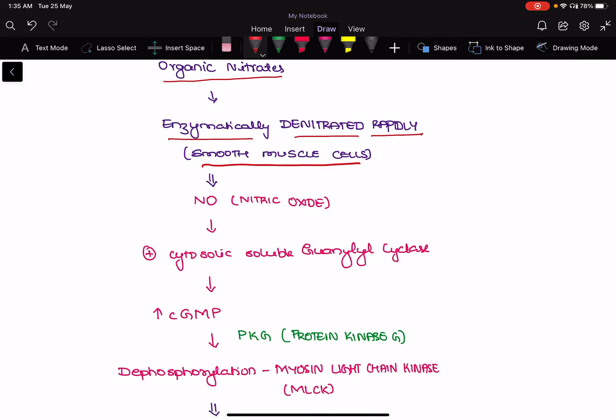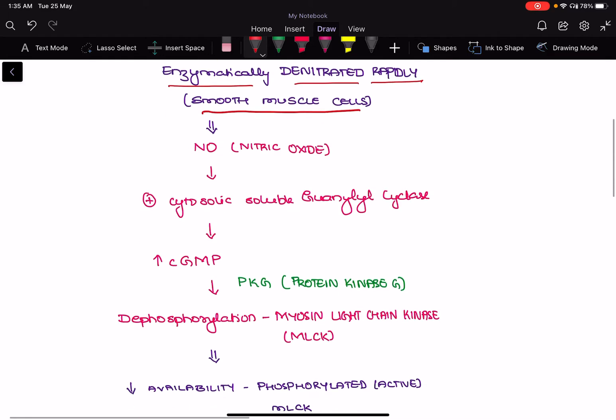Here the vascular smooth muscle will help in enzymatically denitrifying the organic nitrates, and following that there will be release of the nitric oxide. As you know, nitric oxide is a potent vasodilator. It will stimulate the cytosolic soluble guanalyl cyclase.